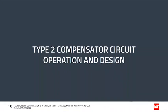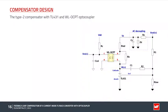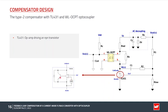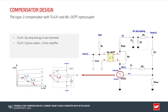Let us see now how to implement a type 2 compensator circuit for our converter. A typical implementation uses a TL431 voltage reference device and a WL OCPT optocoupler. We see the resistor divider R1 and R_low, which for DC set the output voltage, connected to the reference terminal of the TL431. Inside the TL431 there is an amplifier driving an NPN bipolar transistor operating in the active region, so its collector current and collector-emitter voltage are interrelated. If the collector current increases due to a sudden increase in converter output voltage, then the collector-emitter voltage will decrease, and vice versa.